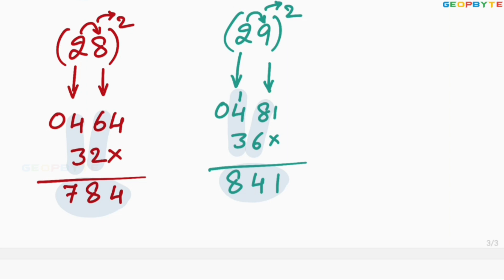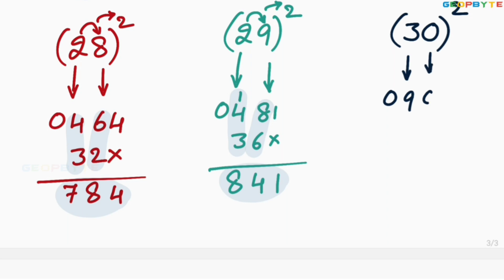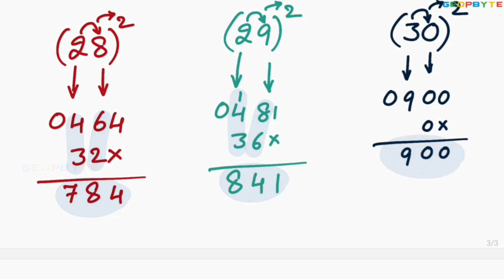Similarly, 30 whole square: 3 square is 09, 0 square is 00. Then 3 into 0 is 0, 0 into 2 is 0. Leave the first space, write 0 here. Add: 0, 0, 9. Therefore, 30 square is equal to 900. I hope you clearly understood.